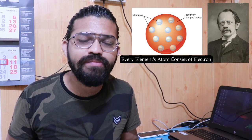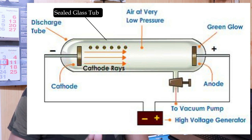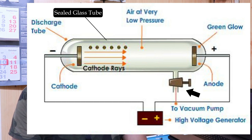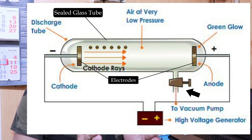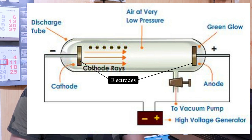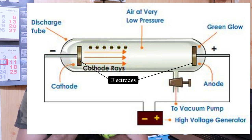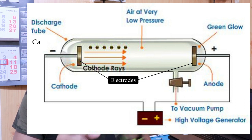He conducted a cathode experiment in which there was a sealed glass tube. Most of the air had been evacuated from the glass tube using a vacuum pump. There were two electrodes connected to a battery supplying high voltage. In that particular vacuum glass tube, the electrode connected to the negative terminal of the battery is known as the cathode, and the electrode connected to the positive terminal is known as the anode.